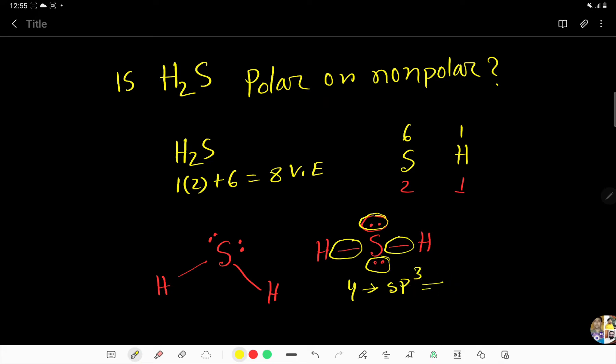So, due to sp3 hybridized, the shape or molecular geometry of hydrogen sulfide should be tetrahedral. Tetrahedral.